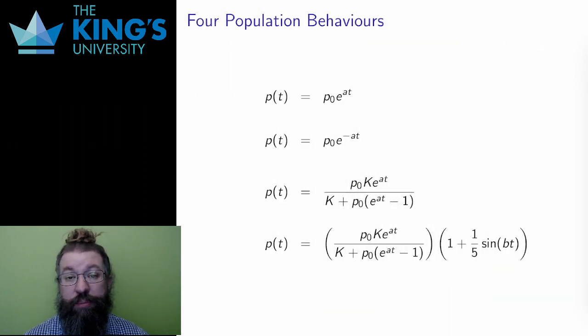Let me talk about some population models. Here are four. I'll do the asymptotic analysis of each. In each, p0 is the starting value, what you get when you evaluate p at time zero.